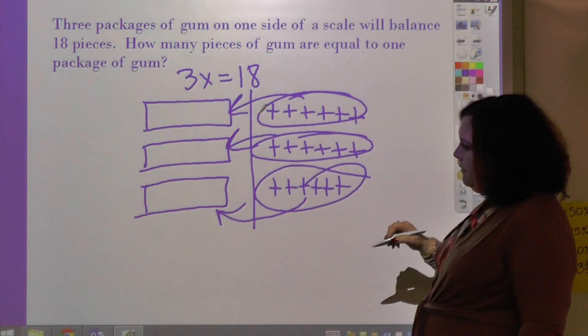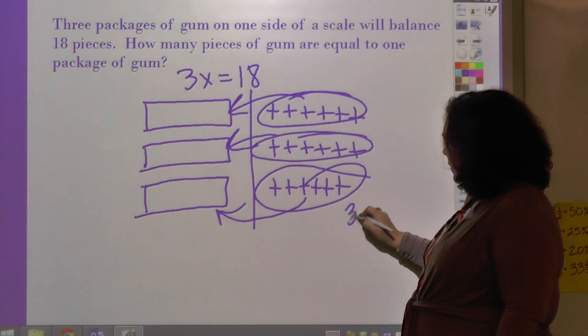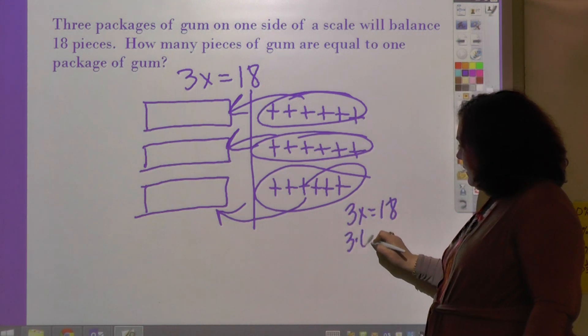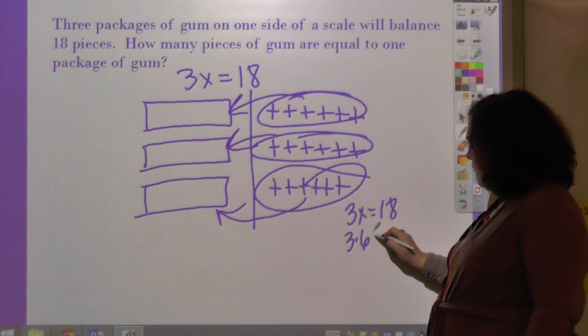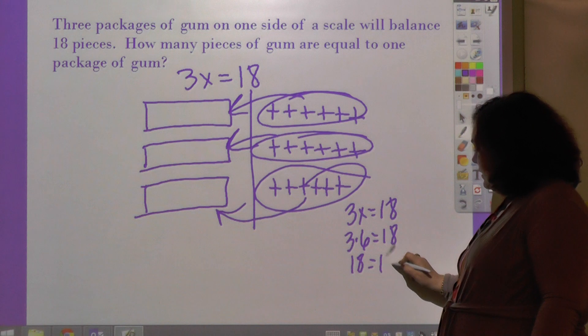So let me check it. 3x equals 18. 3 times 6, that's the 6, equals 18. Yes, 18 equals 18. Check.